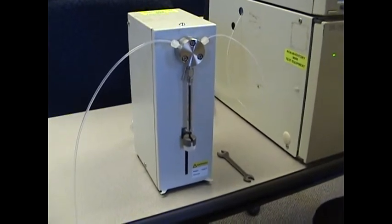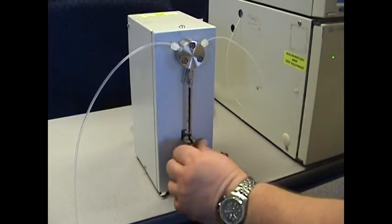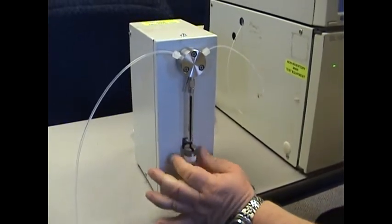You want to first loosen the white Teflon nut at the bottom. This will free up the plunger for the syringe.